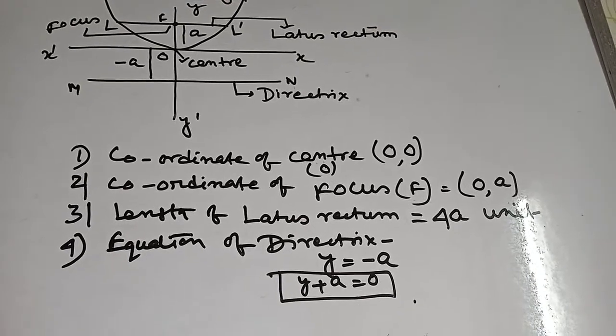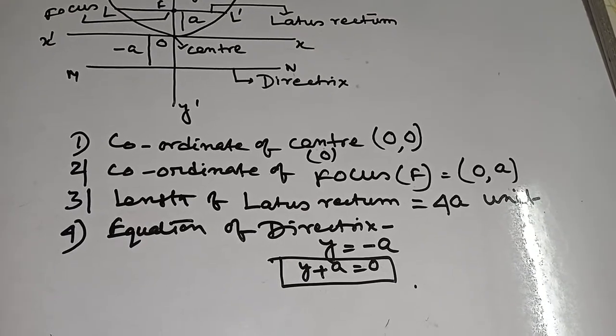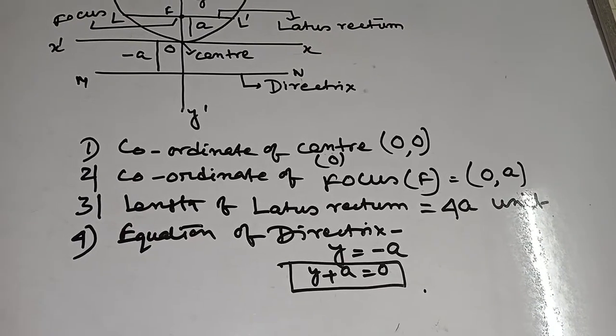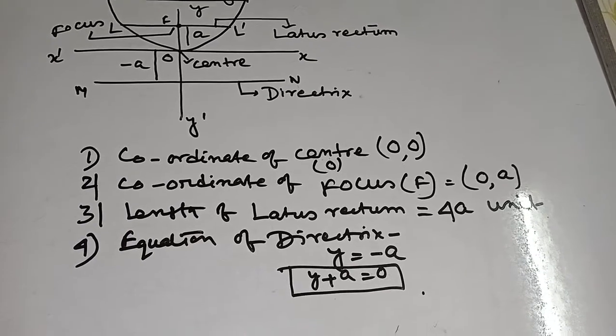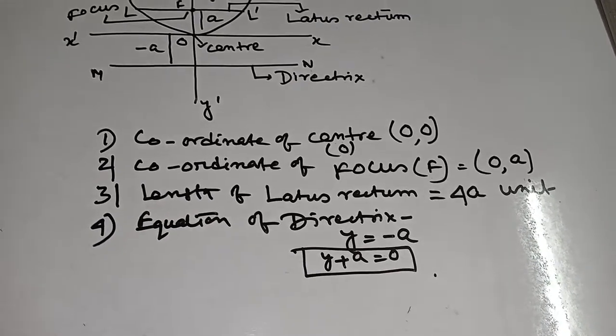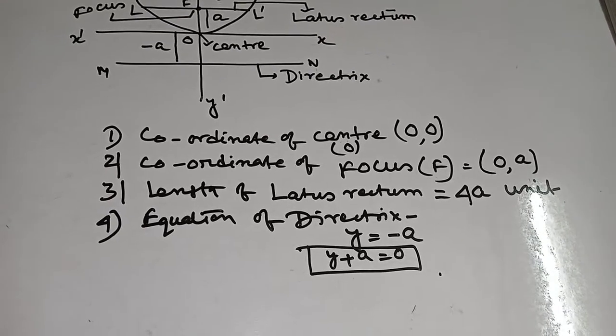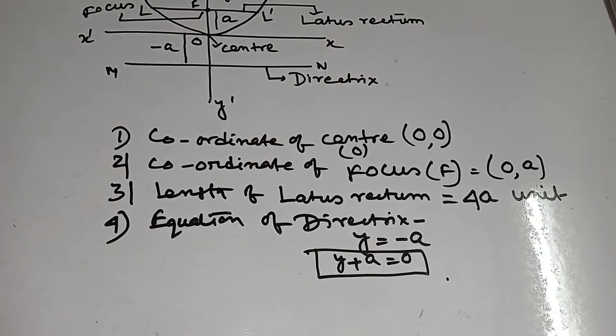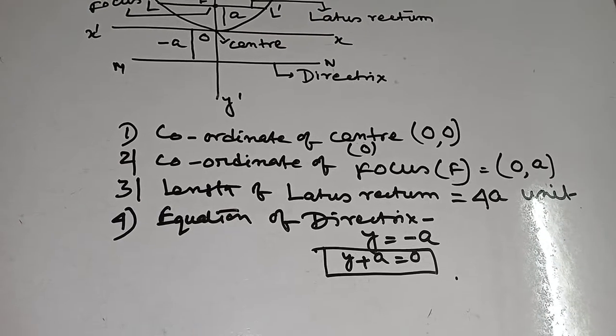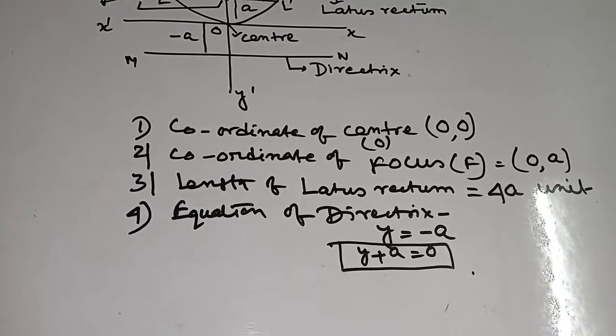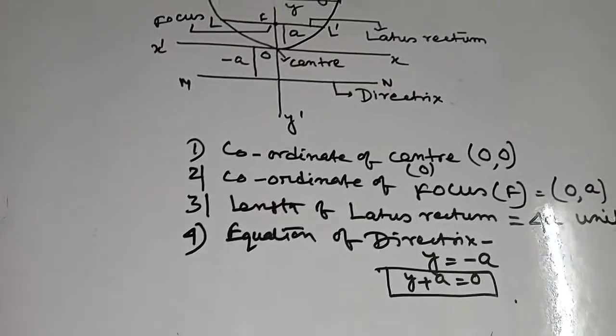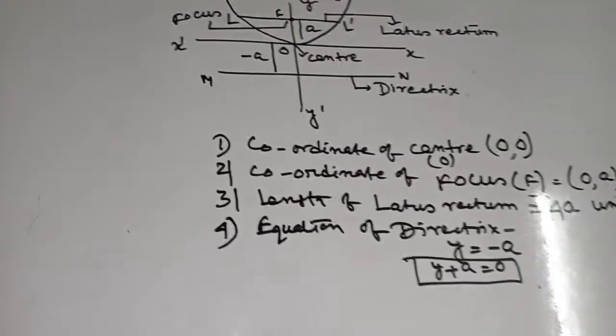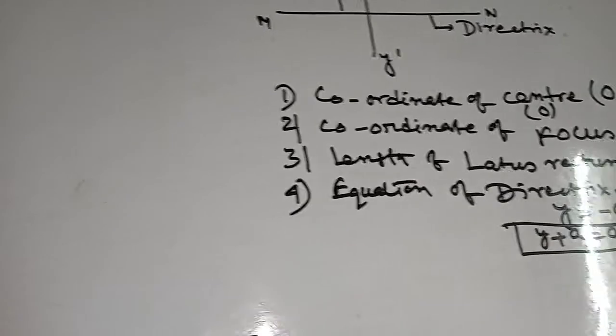Length of latus rectum 4A unit, this is always positive. Equation of directrix y plus A equal to 0. This formula should be learned.